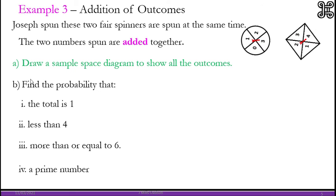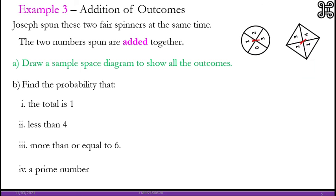Now let's look at where you have to design your own sample space diagram. So here we have Joseph spun these 2 fair spinners. So Joseph spun these 2 fair spinners at the same time. So 1 is circular and 1 is a square spinner.